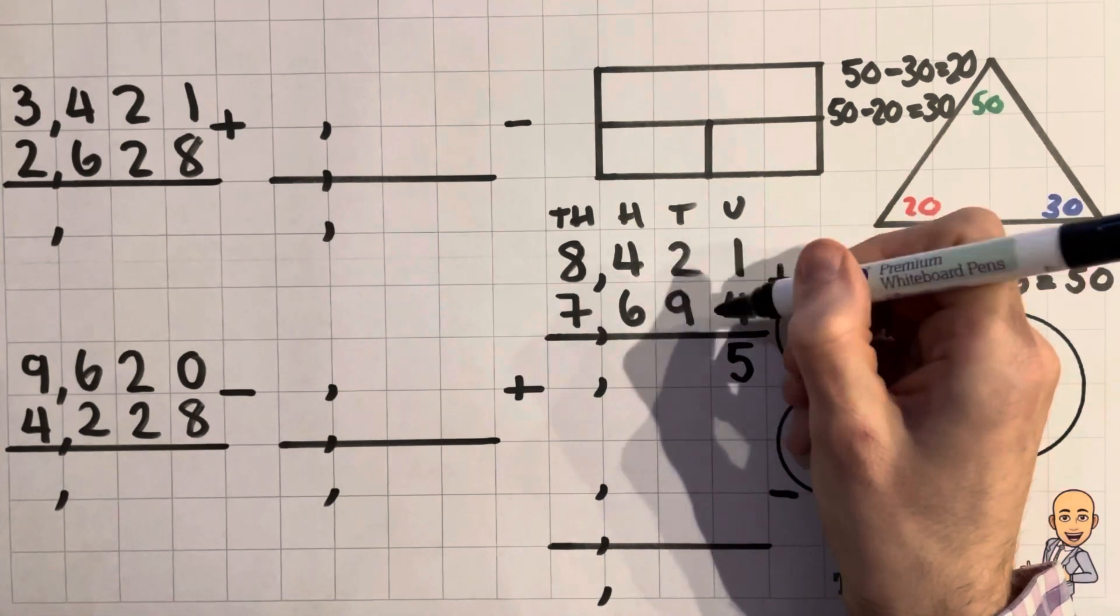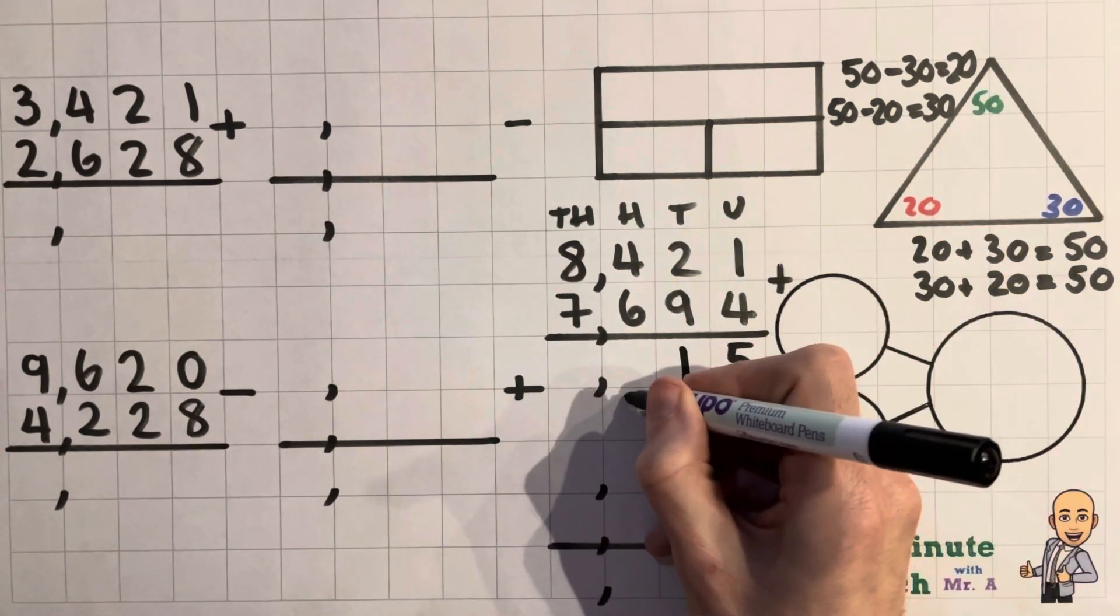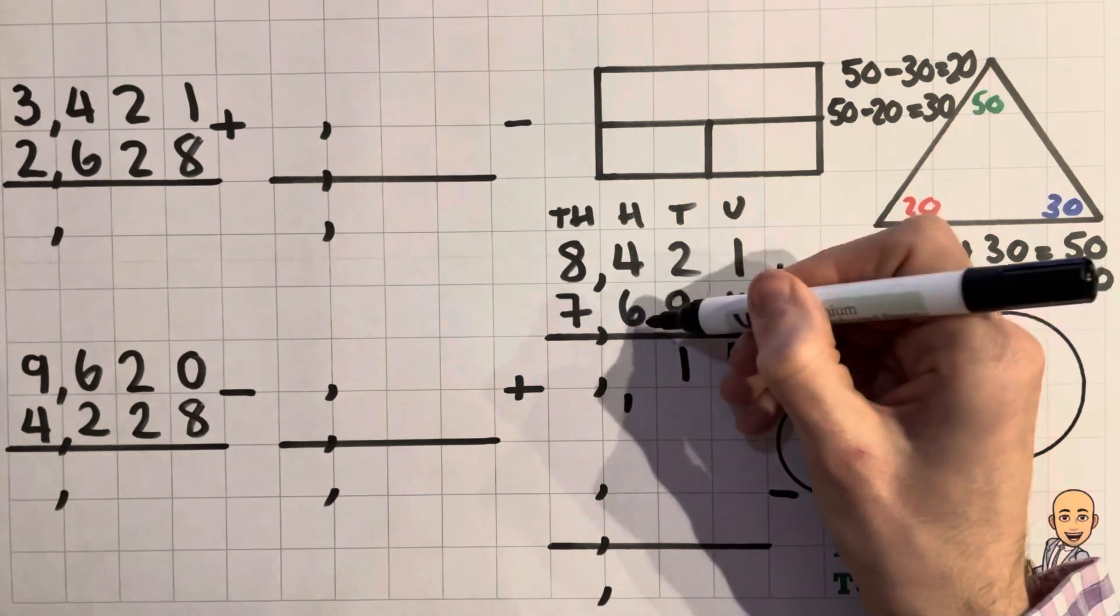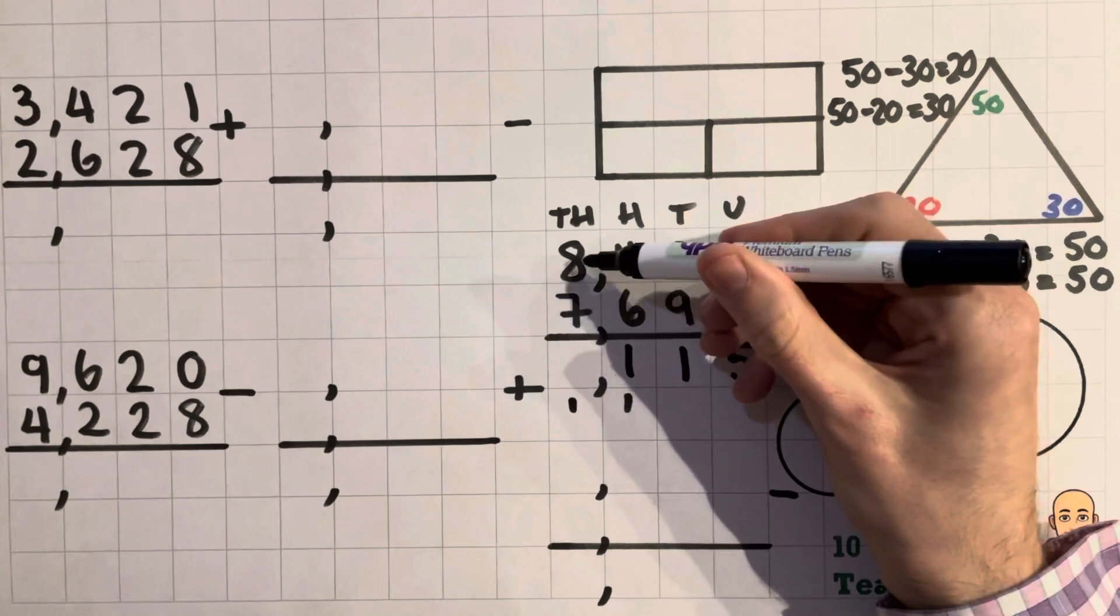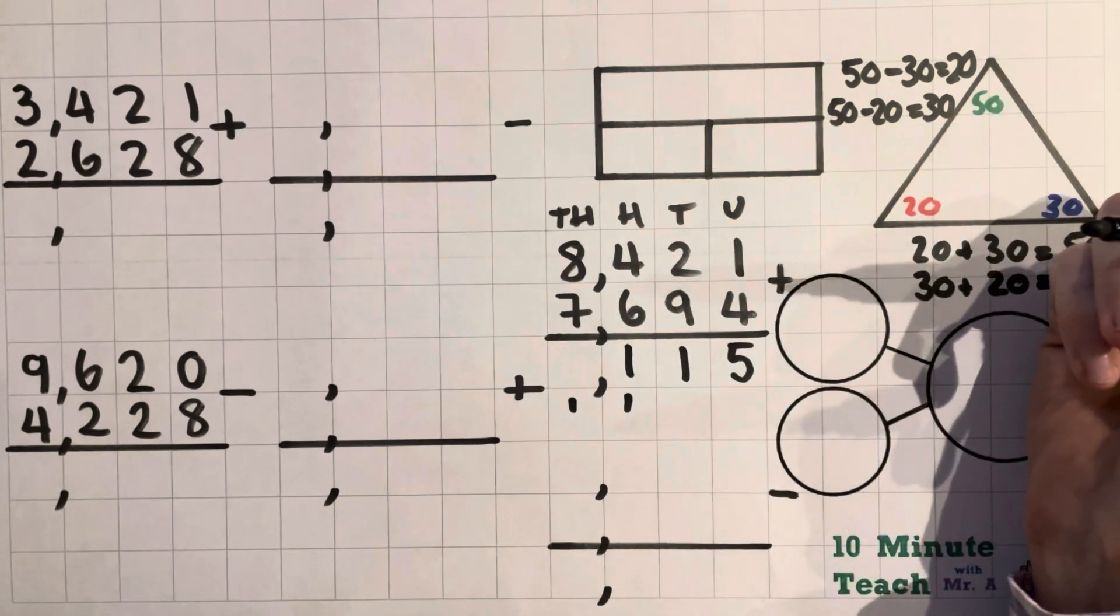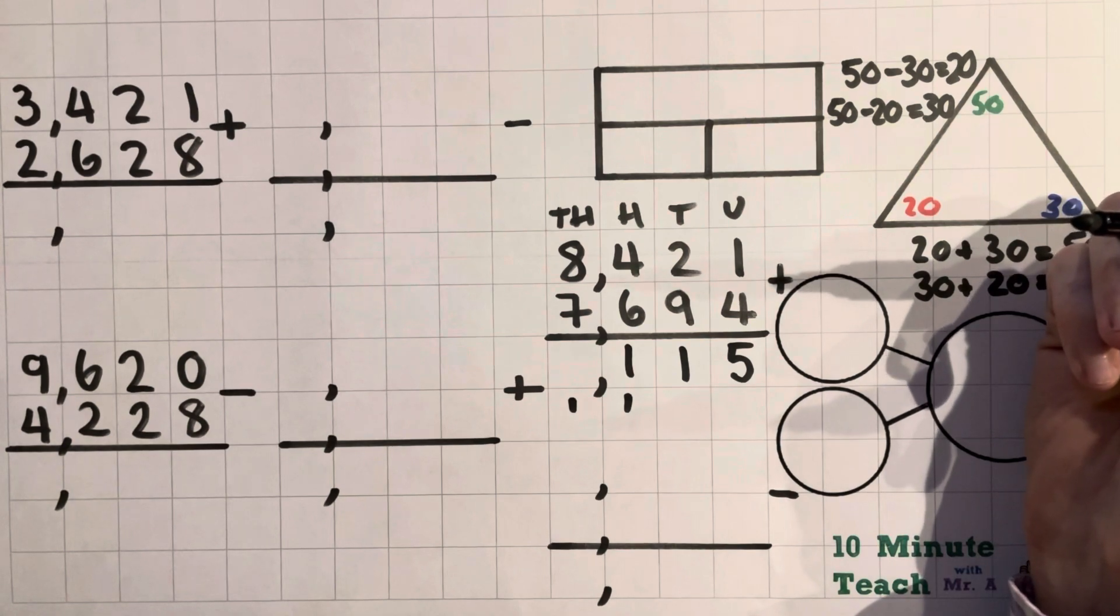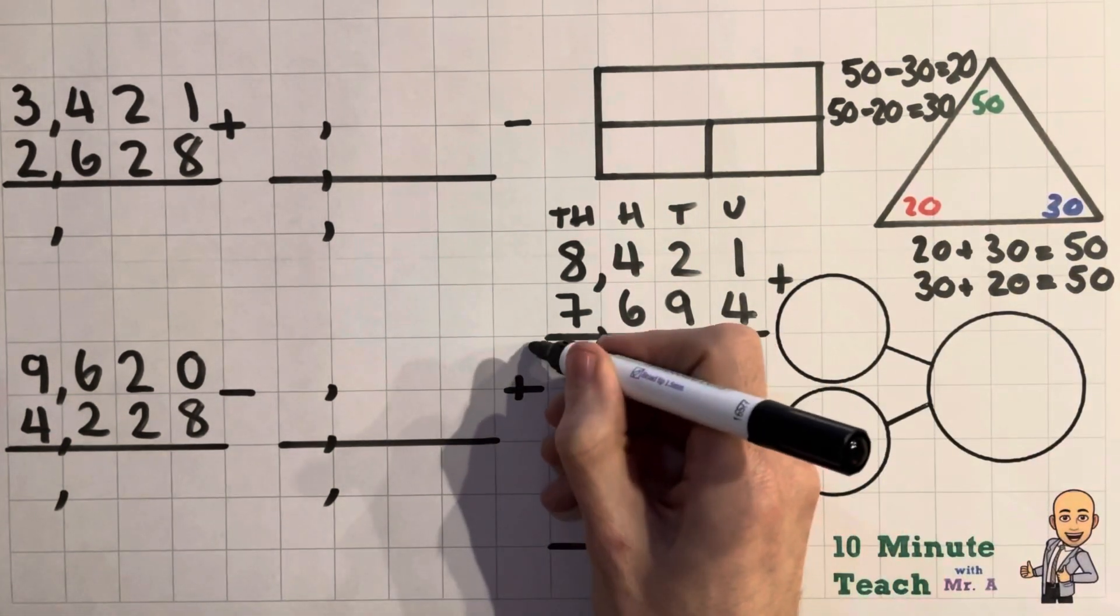20 add 90 or 2 add 9 is 11, so we carry the 1. 4 add 6 or 400 add 600, well we've got 10 add the extra one is 11. And then we've got 8 add 7 or 8,000 add 7,000 which equals 15,000. Add the extra one is 16,000.